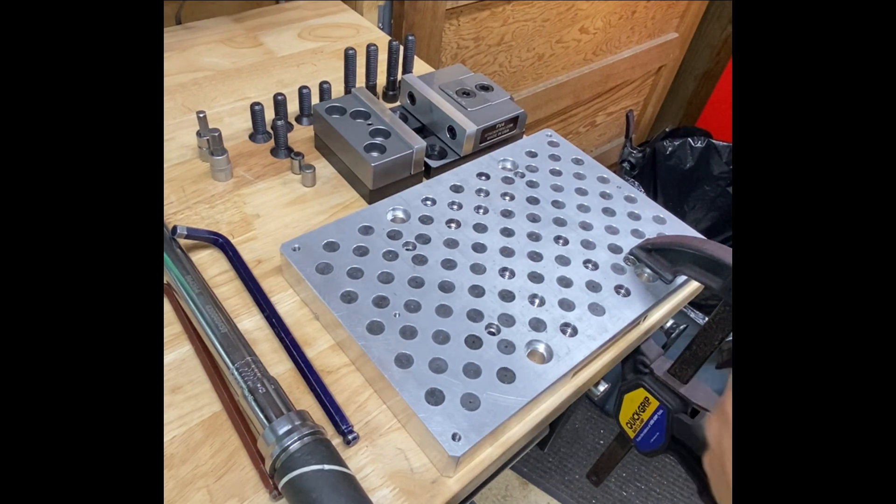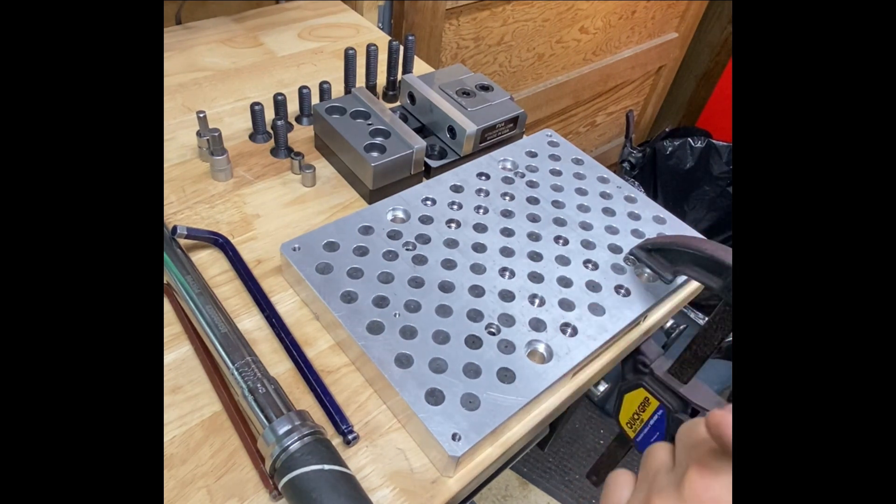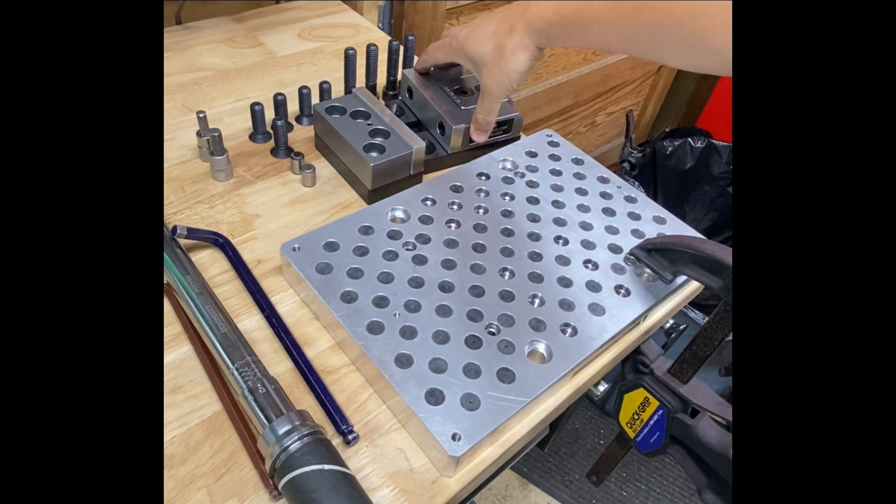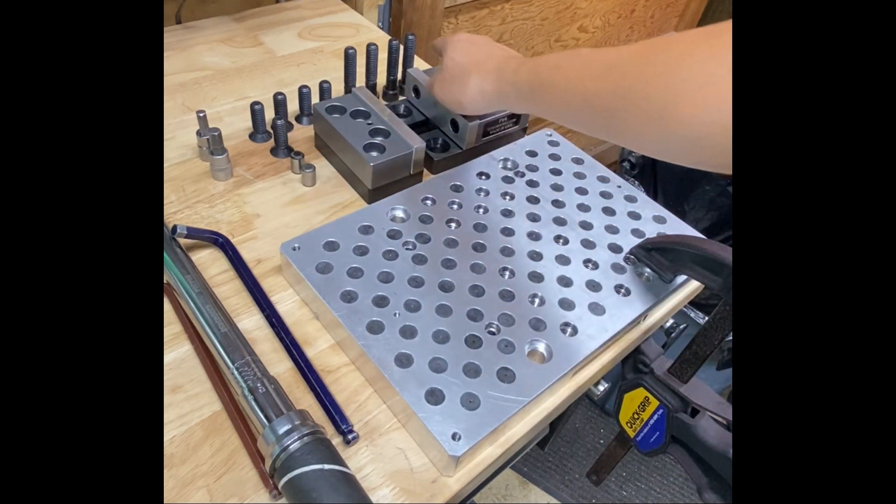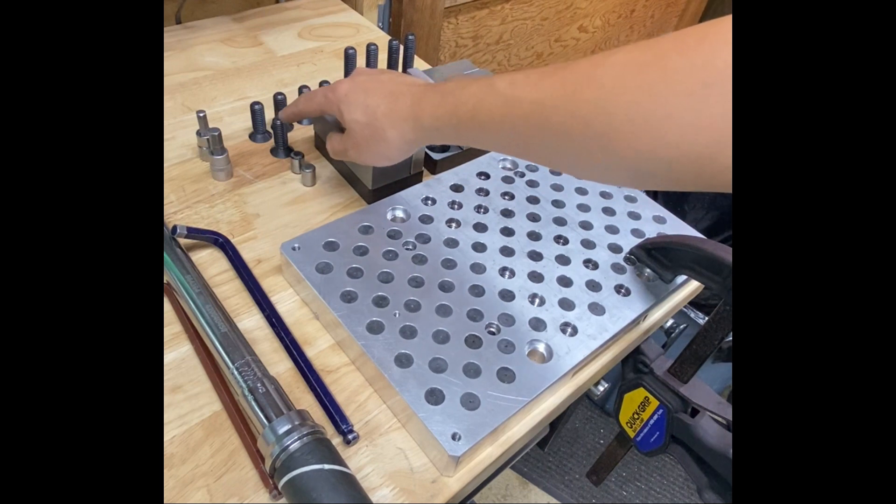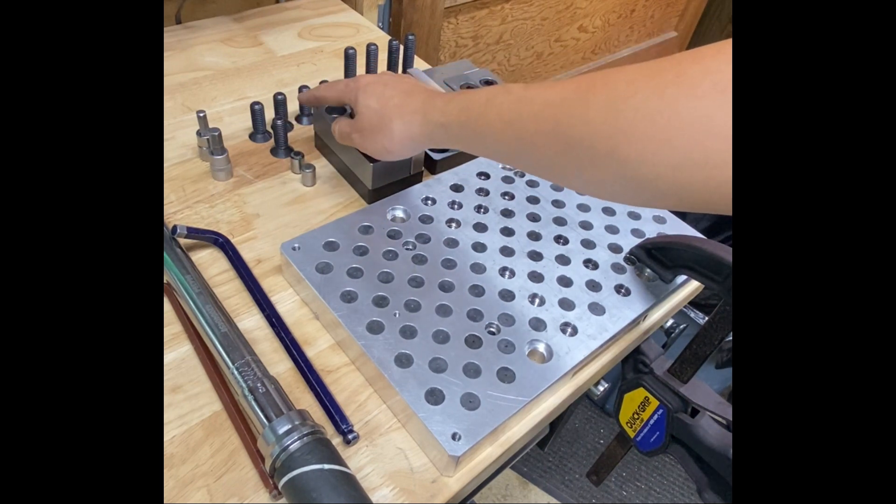Alright, this is just a quick overview on how to install your FB4 fixture vise. Your vise is going to come as shown here with the following fasteners: five half inch 13 flat heads.